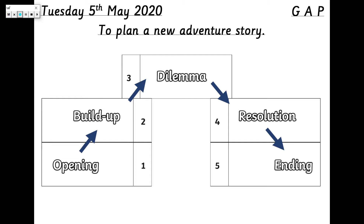I'm really impressed with you. So today we're going to become authors — we're going to produce our own book by the end of the week. And as all brilliant authors do, we are going to plan a new adventure story today. We need to take our time to plan our stories carefully so that we can make sure we're adding all the detail we need.